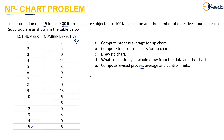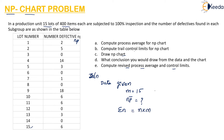For the solution, the data given: m is the lot size, and NP̄ (the process average) is unknown and must be calculated. The total number of items inspected is sigma of n = n × m = 400 × 15 = 6000. We need to draw the NP chart, derive the conclusion, and provide the revised process average and control limits.